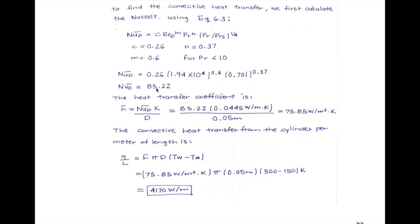Knowing the Nusselt number, the convective heat transfer coefficient is H = Nu_D · k / D, giving H = 75.85 W/(m²·K). Applying Newton's Cooling Law on a per-meter-length basis: Q = H · A · ΔT = H · (π·D·L) · (T_surface − T_∞), which gives 4,170 watts per meter.